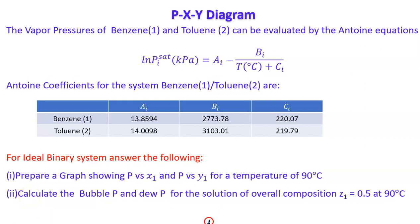Today I will talk about the P-X-Y diagram. The problem gives the vapor pressure of benzene (component 1) and toluene (component 2), which can be evaluated by the Antoine equation. The Antoine equation is: ln(P_i_saturated) in kPa equals A_i minus B_i divided by (T in degrees centigrade plus C_i). The Antoine coefficients for the benzene-toluene system are also given in a table.